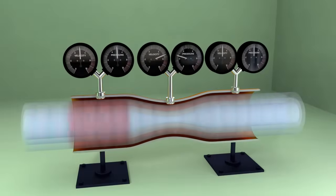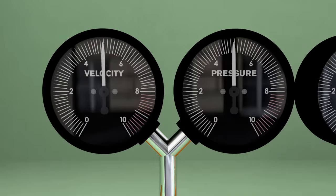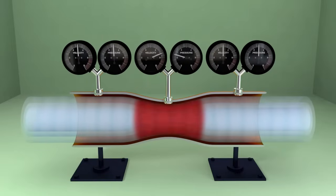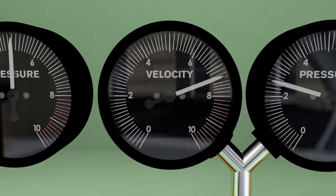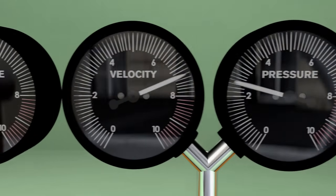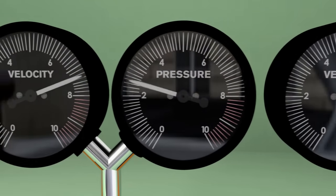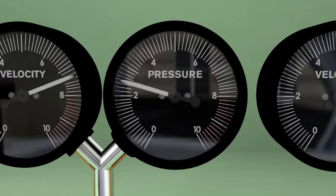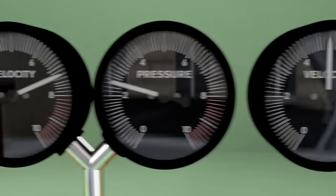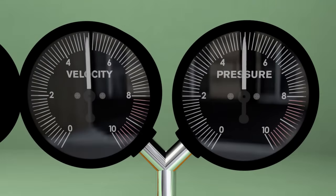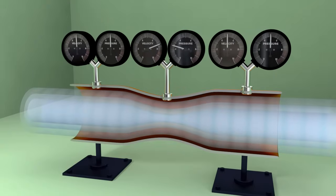As air enters the tube, it is traveling at a known velocity and pressure. When it arrives at the narrower portion, the velocity increases to allow the air through. As the air's velocity increases, the air's pressure decreases. Then, as the air exits the narrower portion, it returns back to its original velocity and pressure.